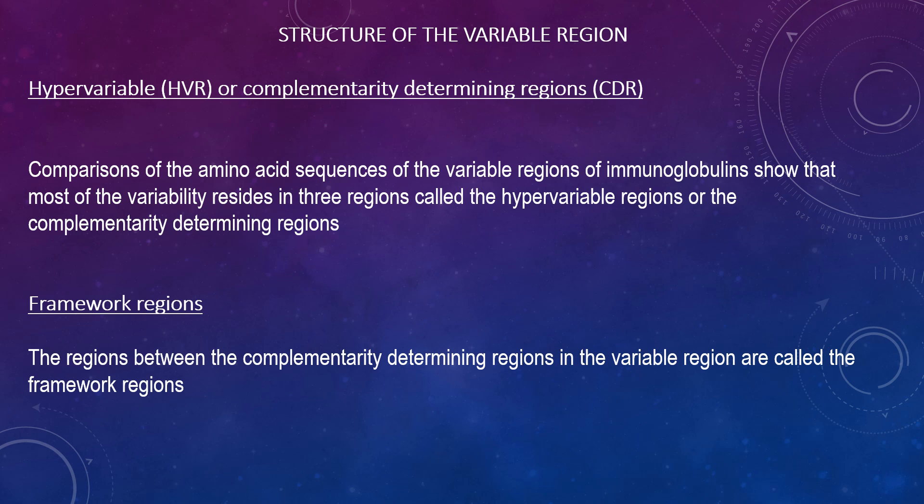Comparison of amino acid sequences of the variable regions of immunoglobulins shows that most of the variability resides in three regions called the hypervariable regions or the complementary determining regions. Antibodies of different specificities — such as different combining sites — have different complementary determining regions, while antibodies of the exact same specificity have identical complementary determining regions. These are found in both the H and L chains. For framework regions, the regions between the complementary determining regions and the variable region are called framework regions.